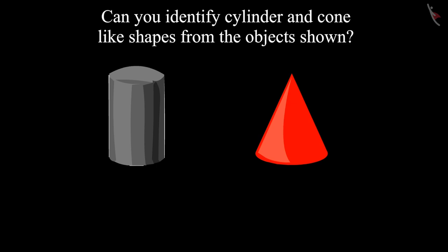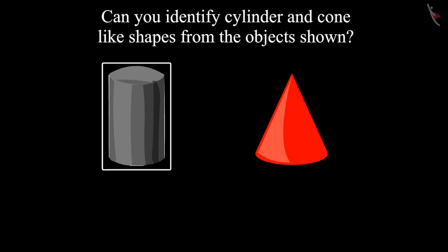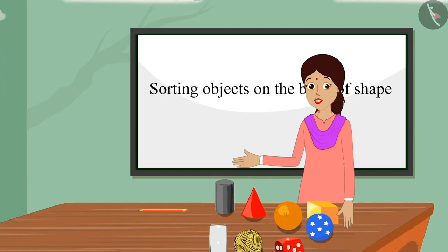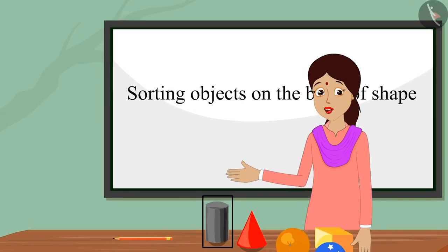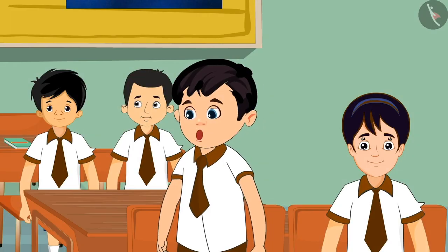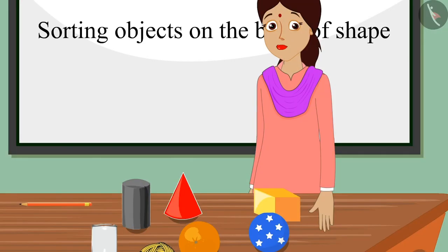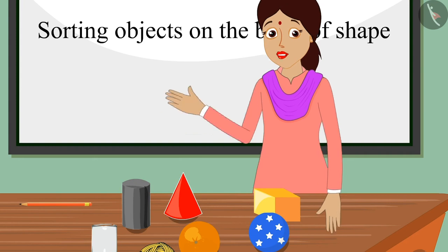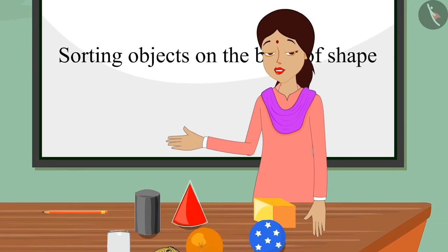The teacher asks: children, can you identify the shape of these objects? A child answers: its shape is like that of a cylinder. Well done, Pinky — it is like a cylinder. Another child says: its shape is like a cone. Well done, Chotu — it has a cone-like shape.